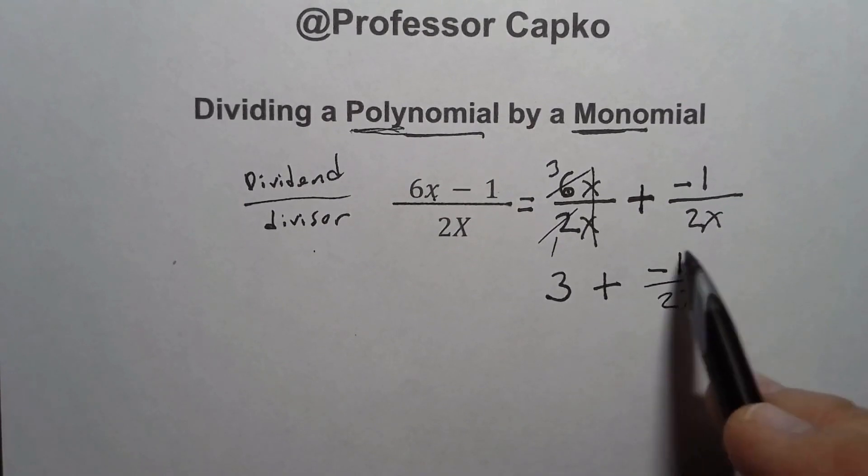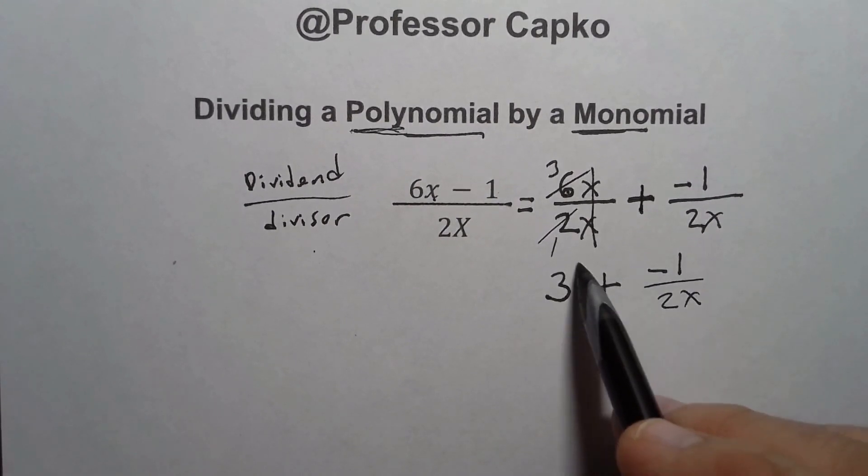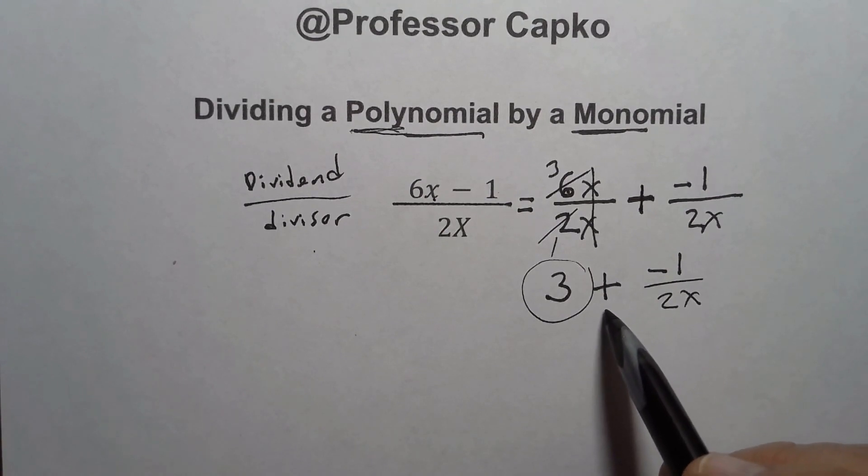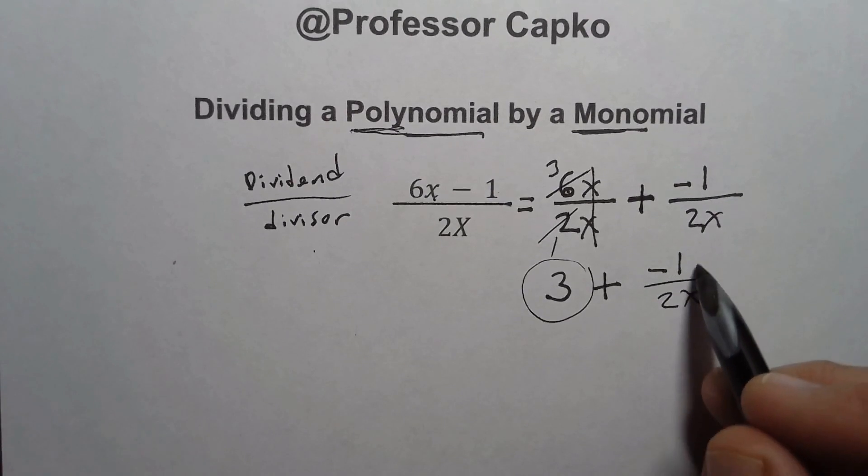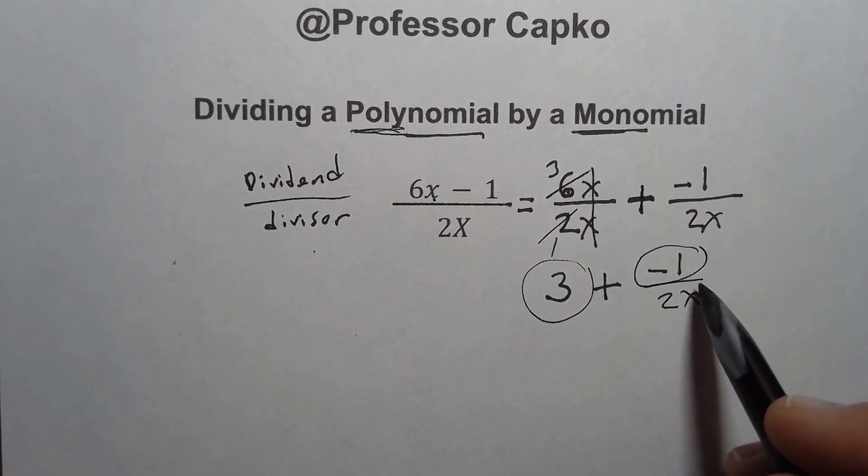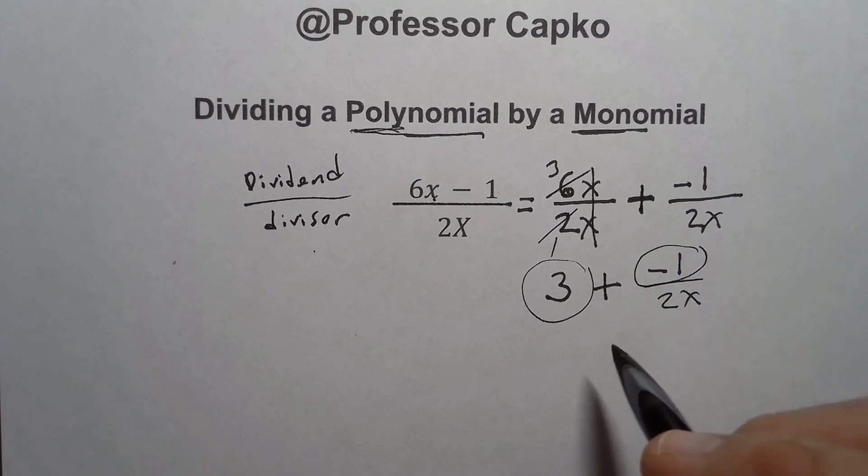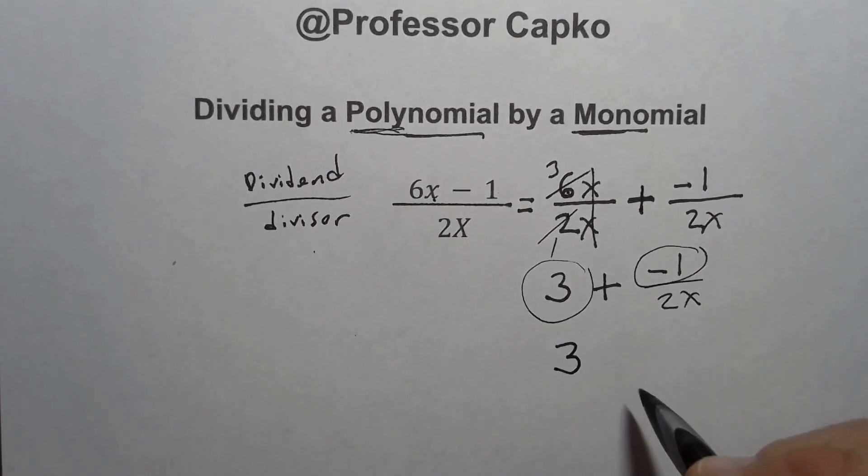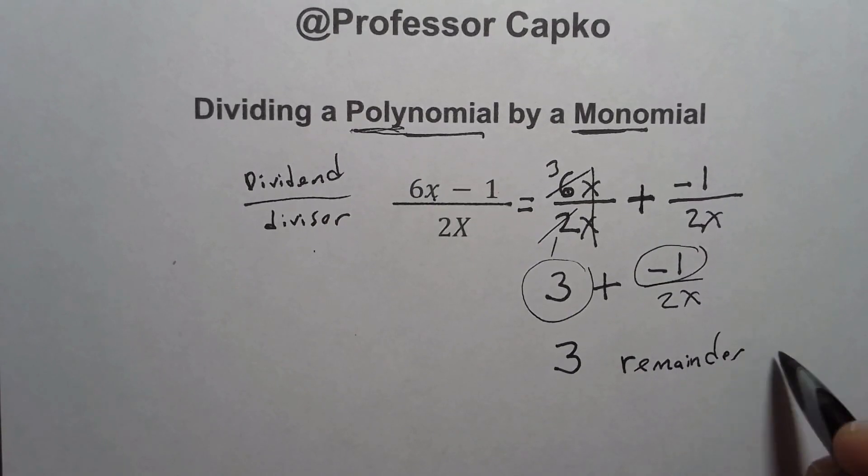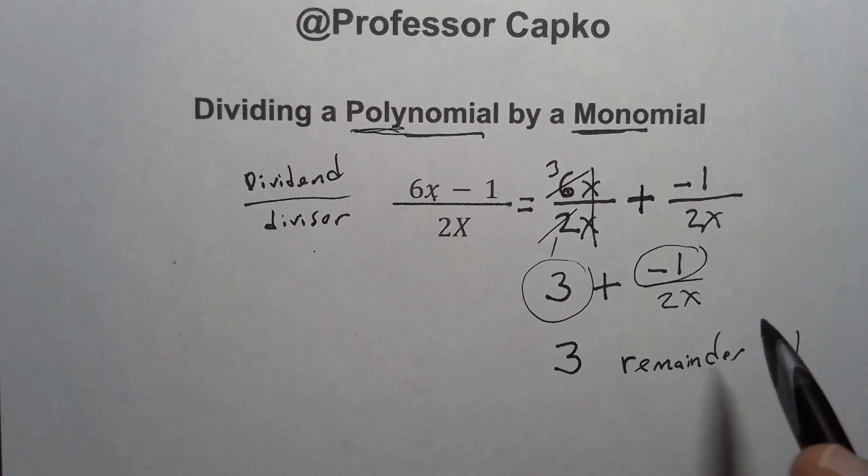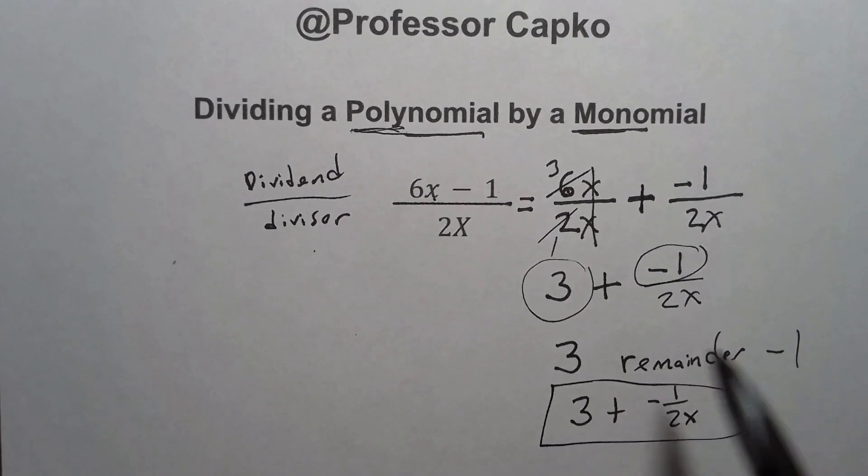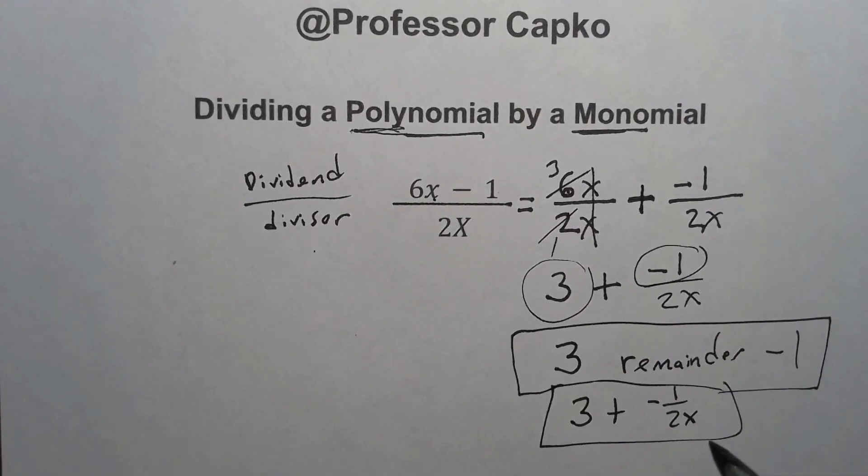This is actually the answer to this. This part here is the quotient, and this part is the remainder, but it's only the top because the top is the remainder. So I would write this finally as 3 remainder negative 1. There are actually two different ways I could write this answer: I could write it as 3 plus negative 1 over 2x, or I could write it as 3 remainder negative 1.